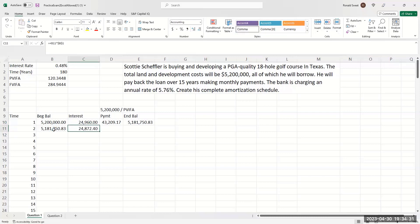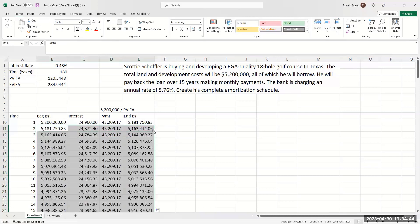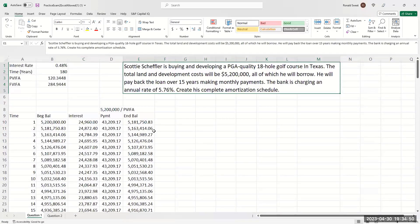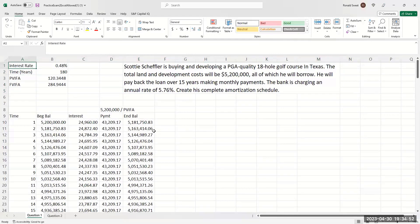His interest is going to be that beginning balance times the rate. You have to hit the F4 to lock it in with the dollar signs. If you're using a Mac, it's probably the function F4 or something. The payment is going to be 5,200,000 divided by the present value interest factor of annuity. Then your ending balance is your beginning balance plus the interest minus the payment. It looks exactly like Excel application one.